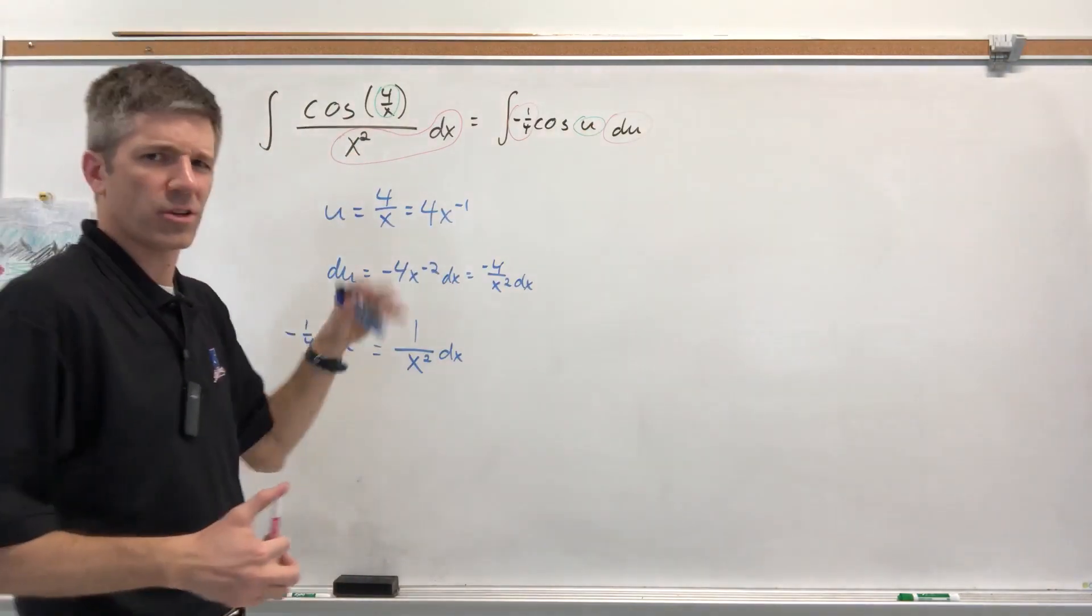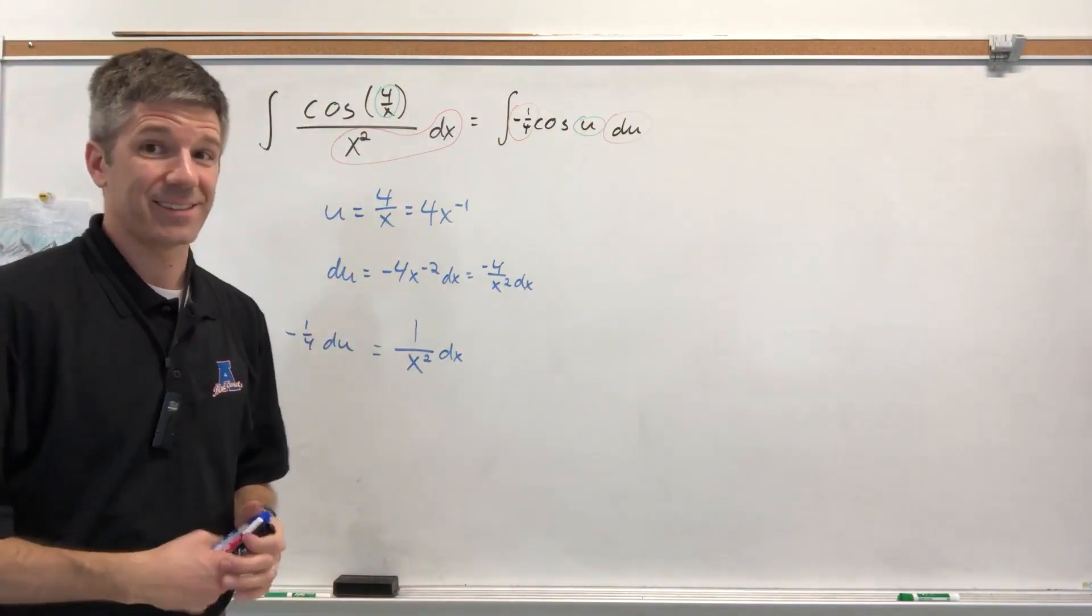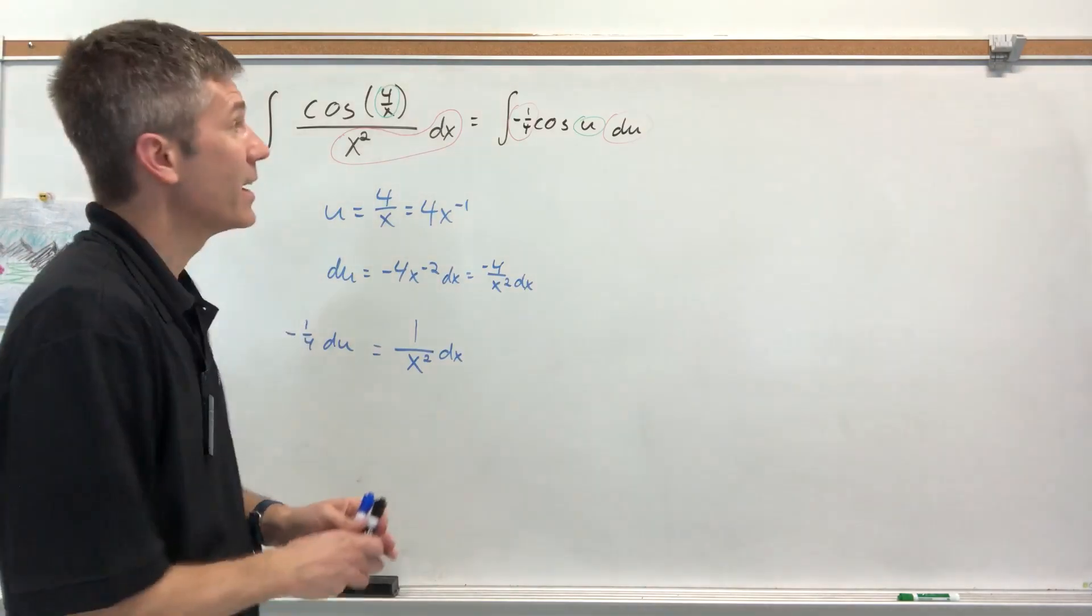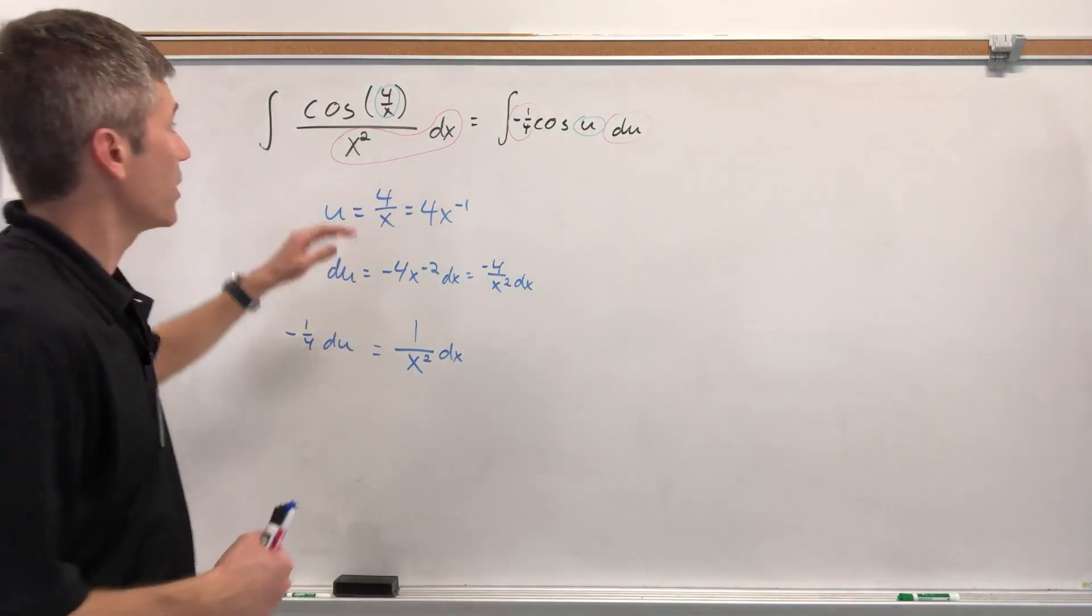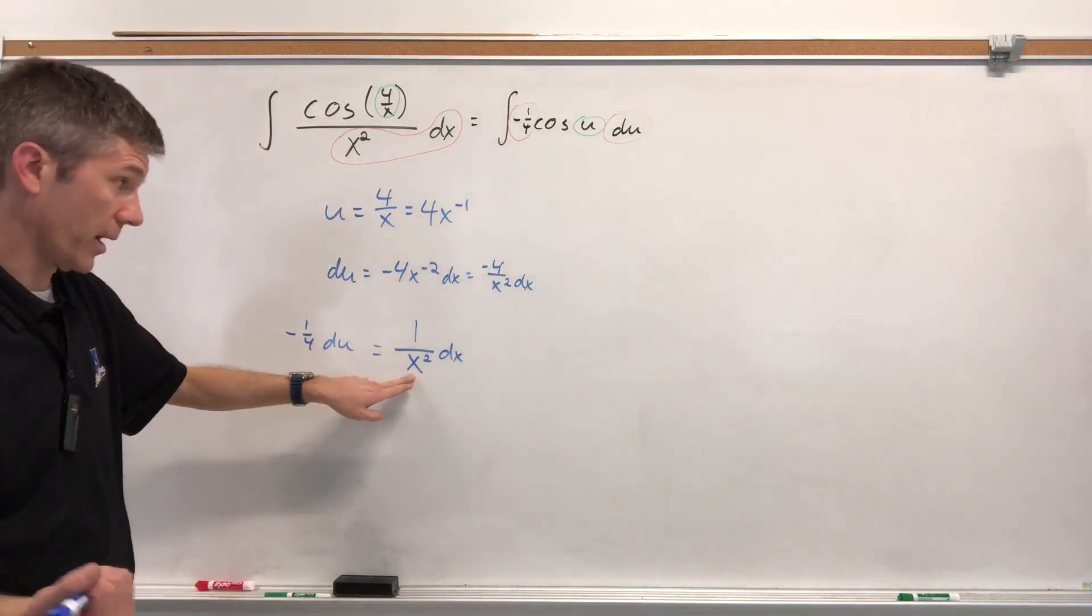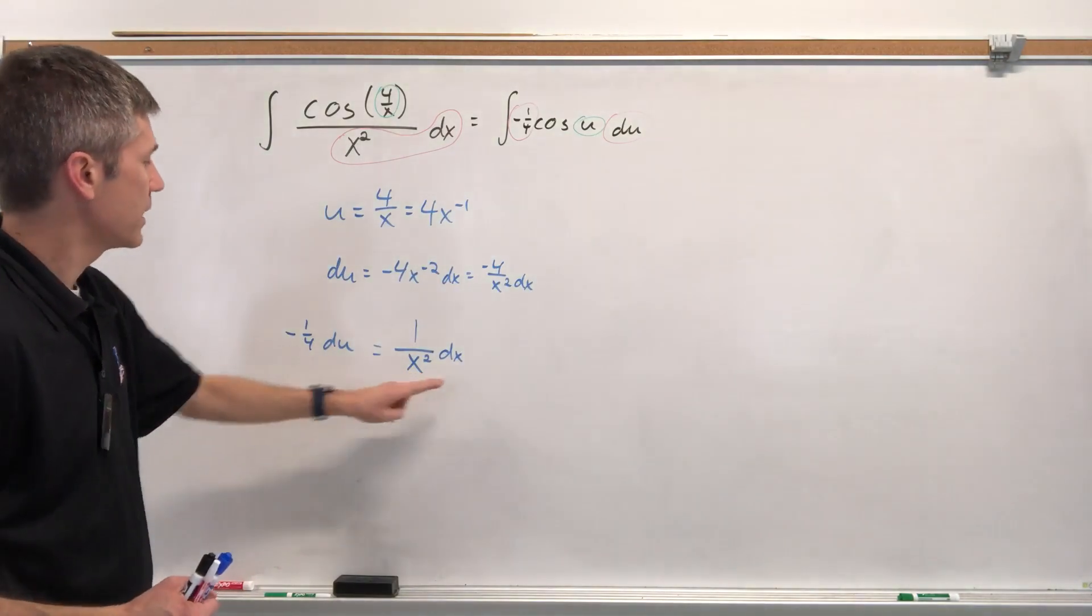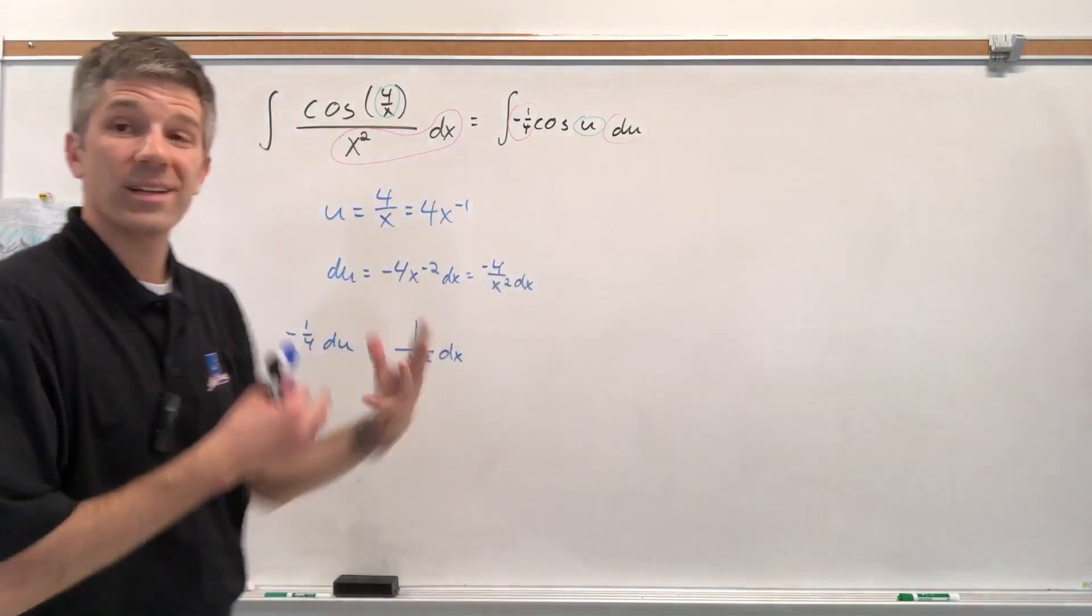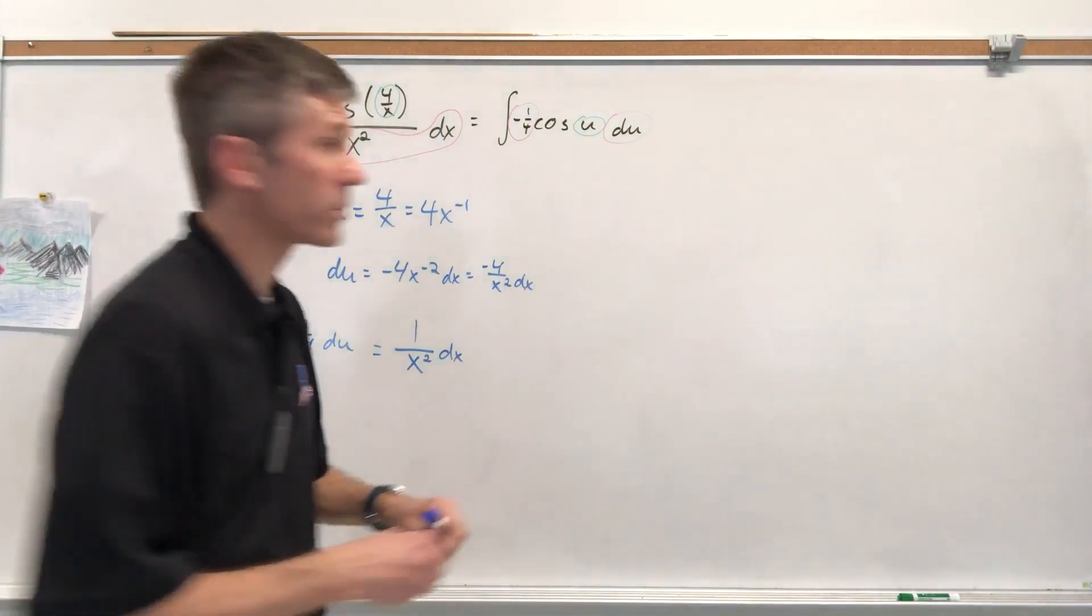Like you just, you're going to get rid of your X squared in the denominator. Yes. Cause you actually haven't gotten rid of it. It's still there because X squared in the denominator, one over X squared DX is negative 1 4th DU. It's all accounted for. So we're just going to keep moving with this.